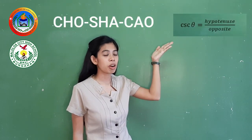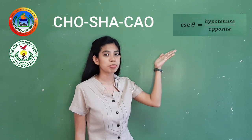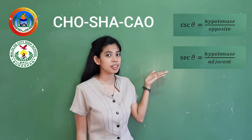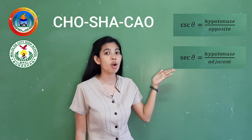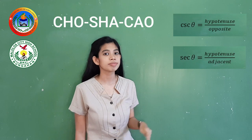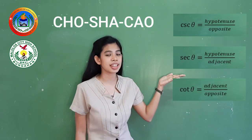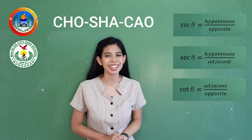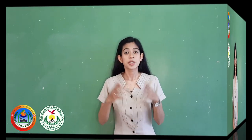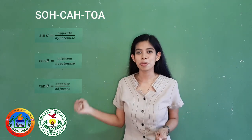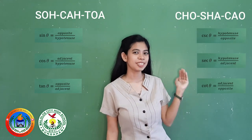For the last three trigonometric ratios, you may use the mnemonic CHO-SHA-KAW. These are the reciprocals of the first three trigonometric ratios. Cosecant of theta equals hypotenuse over opposite. Secant of theta equals hypotenuse over adjacent. And cotangent equals adjacent over opposite. Altogether, we remember all six as SOH-CAH-TOA-CHO-SHA-KAW.